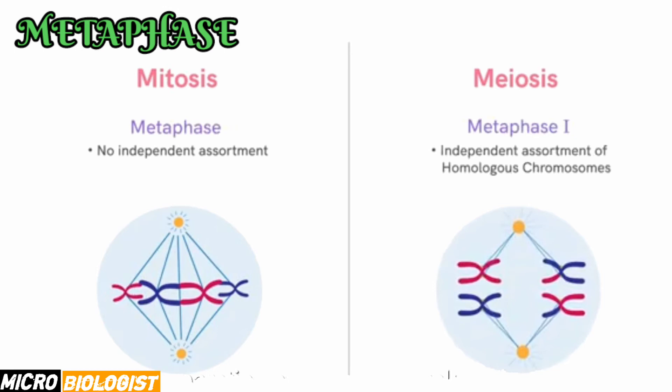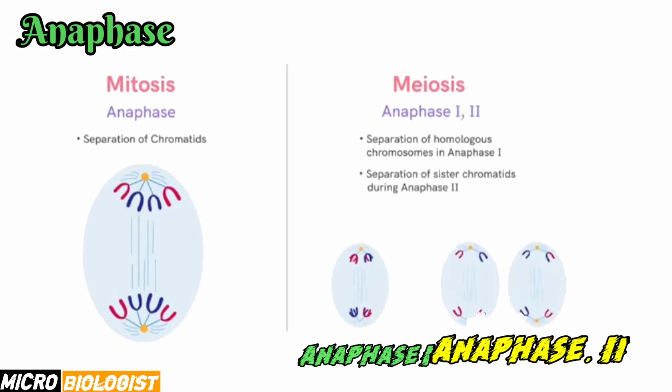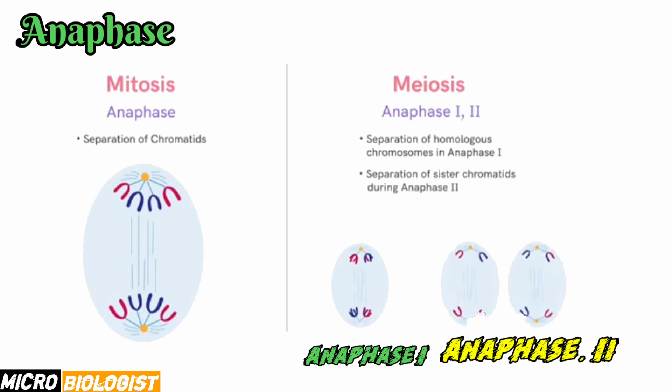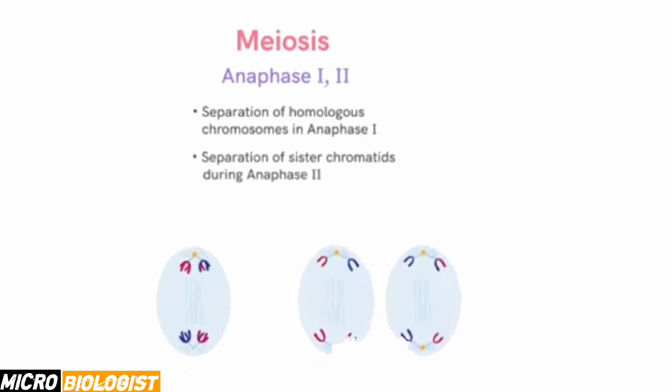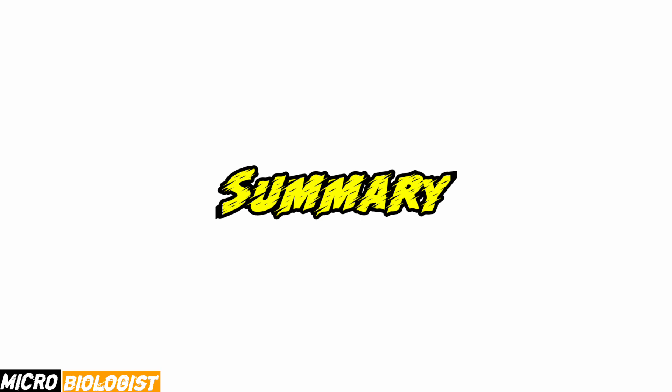The next stage is anaphase. Separation of chromatids takes place during mitosis. On the other hand, separation of homologous chromosomes occurs in anaphase one of meiosis, and separation of sister chromatids occurs during anaphase two. These were the major differences between mitosis and meiosis, which can be summarized in a single table.